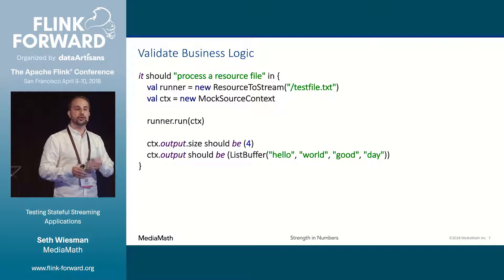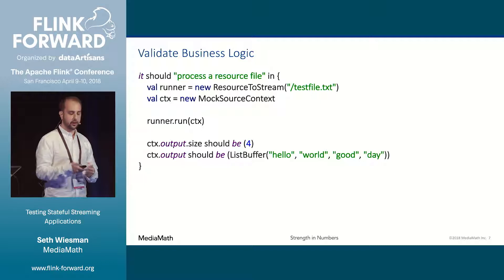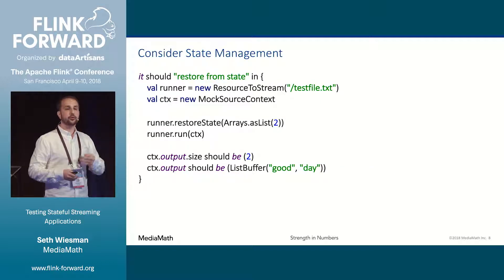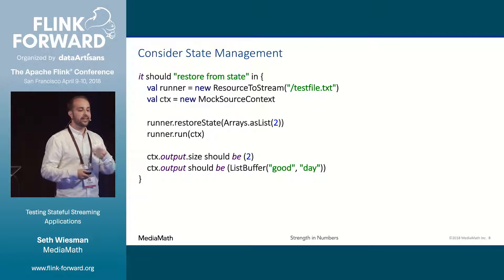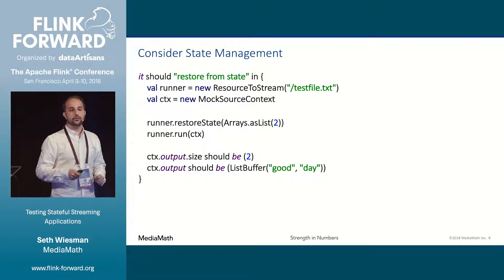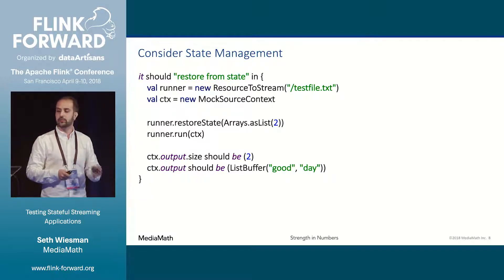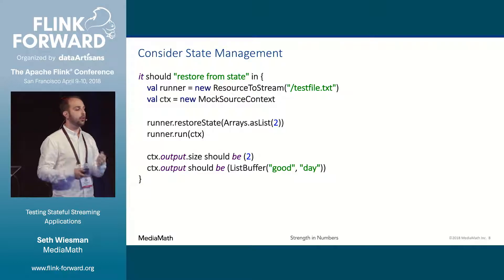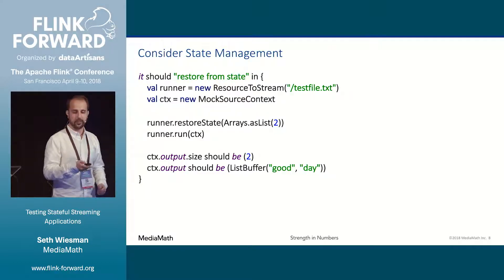If you squint, this already looks like what we're after — methods for business logic and others for state management, with only one variable crossing that boundary, meaning we can think about these things in isolation. That gives us a clear path to testing. I can first look at my business logic: does it read lines from a file? Only after validating that do we need to move on to our state. Because we used ListCheckpointed, it's easy to simulate different scenarios — for example, restoring after having already read the first two lines. Our test confirms we skip those lines and read the rest, giving us confidence in our exactly-once semantics.